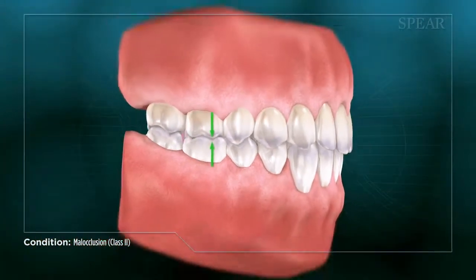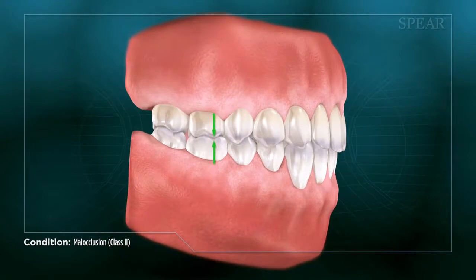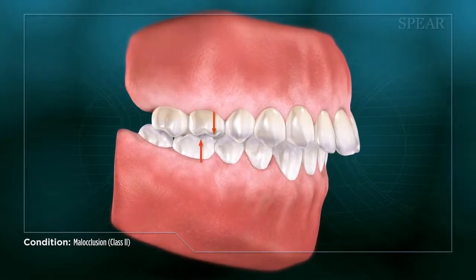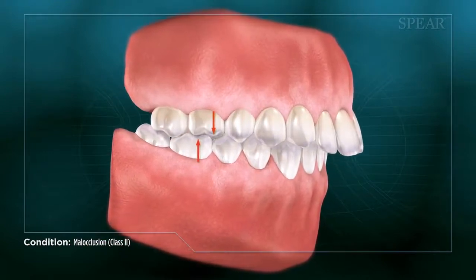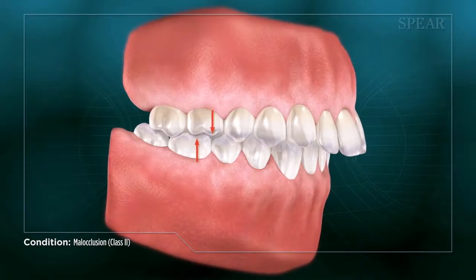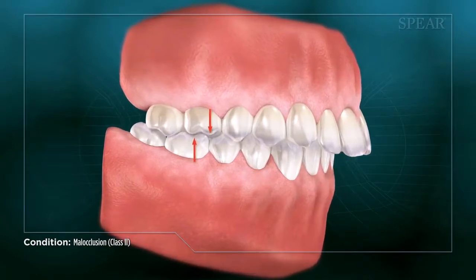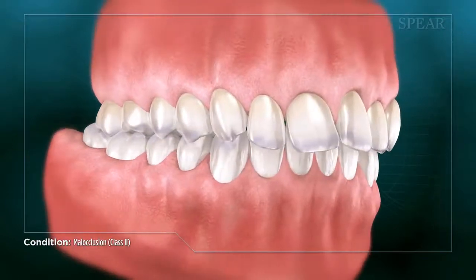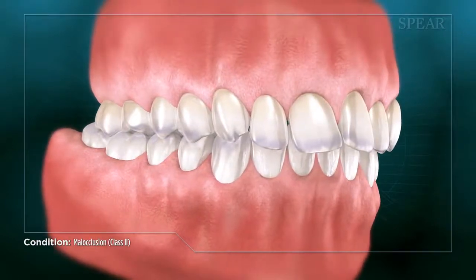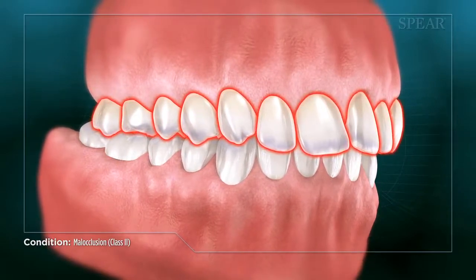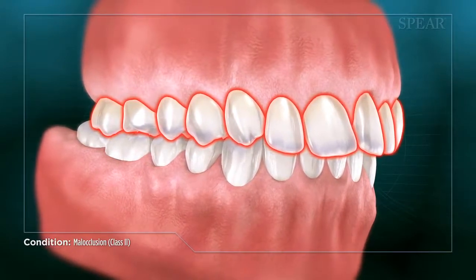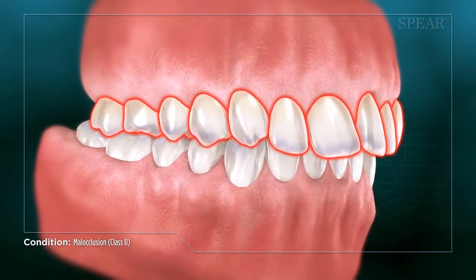In some cases, a patient's upper molars line up forward over their lower molars, causing the upper teeth to protrude forward in what is commonly called an overbite. Depending on the patient, the upper front teeth will usually be either tilted outward towards the lip or inward toward the lower teeth.